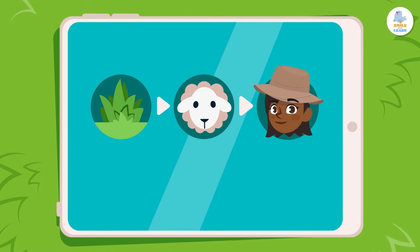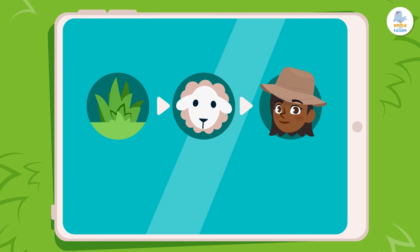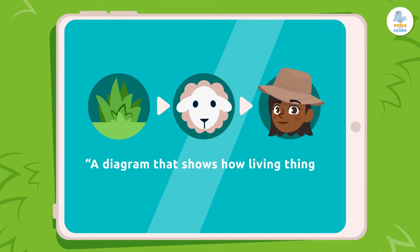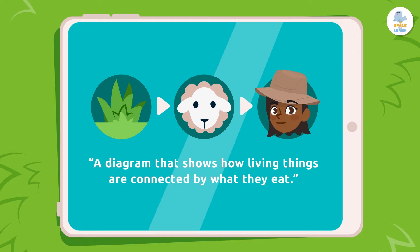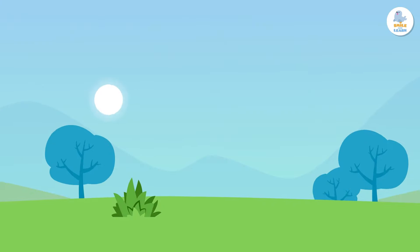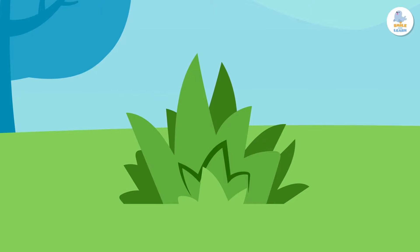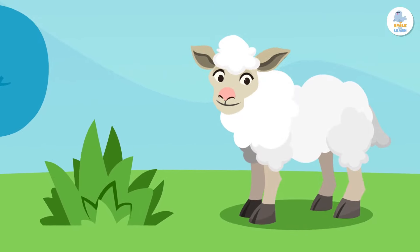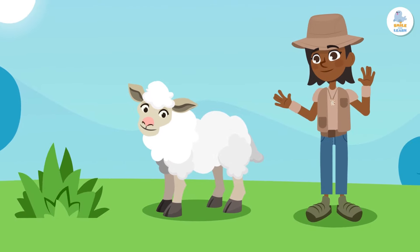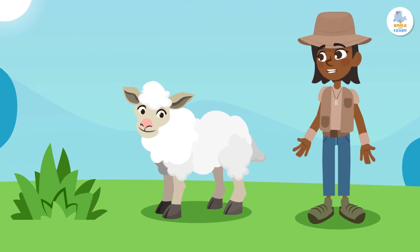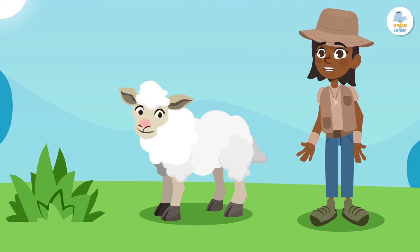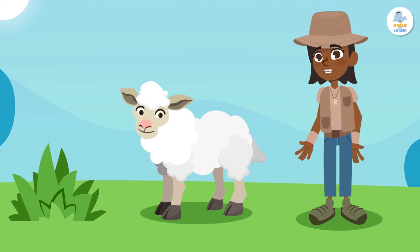So what is a food chain anyway? It's a diagram that shows how living things are connected by what they eat. In other words, it tells us how plants and animals depend on each other for food. In fact, I'm part of a food chain right now. Let's see what the food chain looks like when I eat my lamb chops.